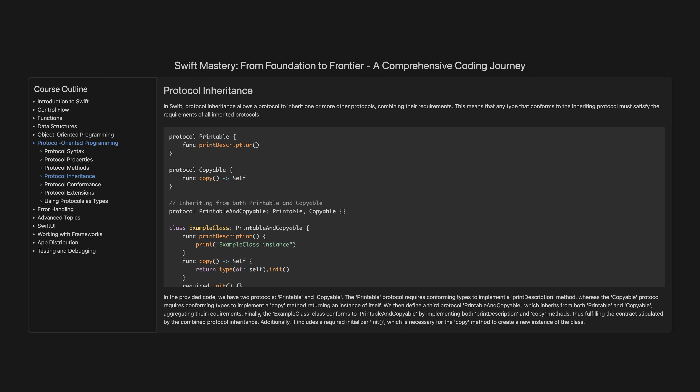Protocol inheritance. In Swift, protocol inheritance allows a protocol to inherit one or more other protocols, combining their requirements. This means that any type conforming to the inheriting protocol must satisfy the requirements of all inherited protocols. In the provided code, we have two protocols, Printable and Copyable. The Printable protocol requires conforming types to implement a printDescription method, whereas the Copyable protocol requires a copy method returning an instance of itself. We then define a third protocol, PrintableAndCopyable, which inherits from both Printable and Copyable, aggregating their requirements. Finally, the ExampleClass conforms to PrintableAndCopyable by implementing both printDescription and copy methods, and includes a required initialiser init necessary for the copy method to create a new instance.